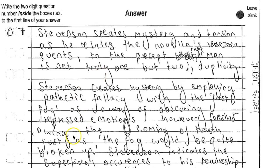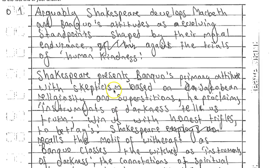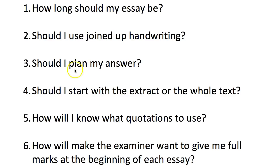With the extract questions — for Jekyll and Hyde he hasn't planned anything, just gone straight into the extract. For the Shakespeare question he's also gone straight in with no plan, jumping to the extract and picking the quotation 'instruments of darkness tells us truths, wins us with honest trifles to betray us' — a quotation from the extract that exactly matches what he wants to say about Banquo.